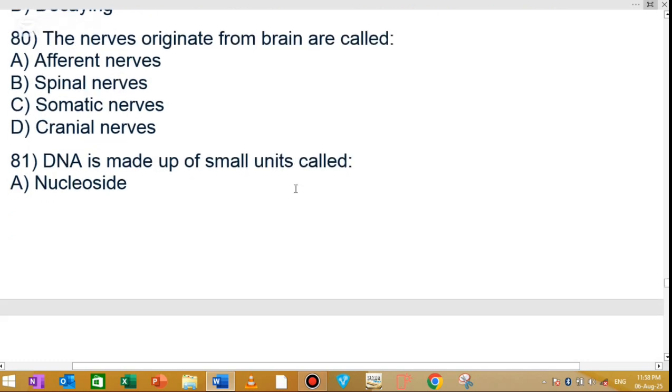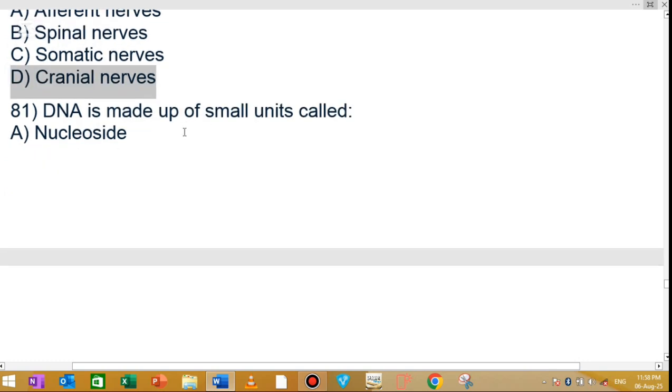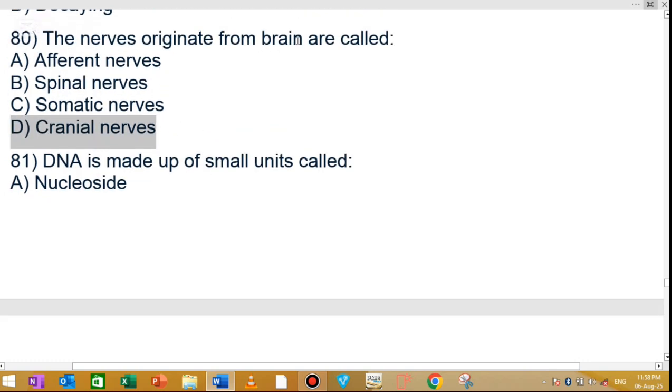MCQ number 80: The nerves originating from the brain are called cranial nerves. The nerves that come from the brain are called cranial nerves. Option C or D is the correct answer, cranial nerves. The nerves from the spinal cord are called spinal nerves.